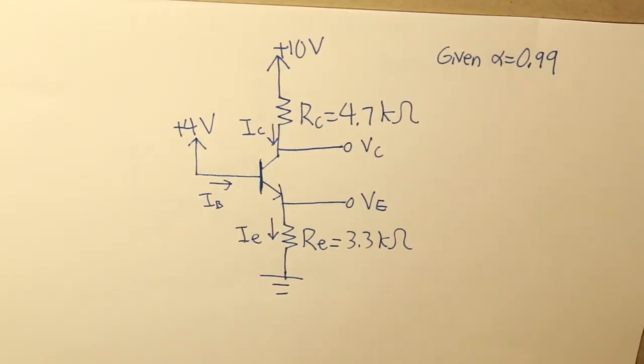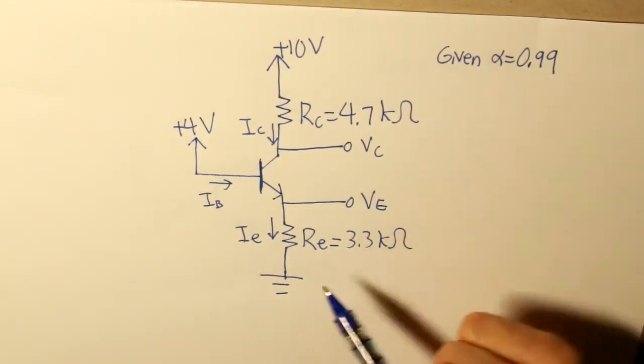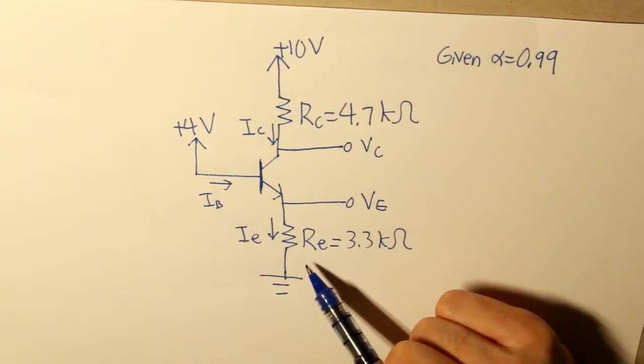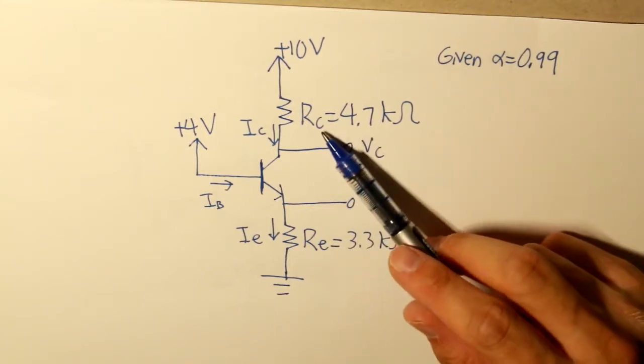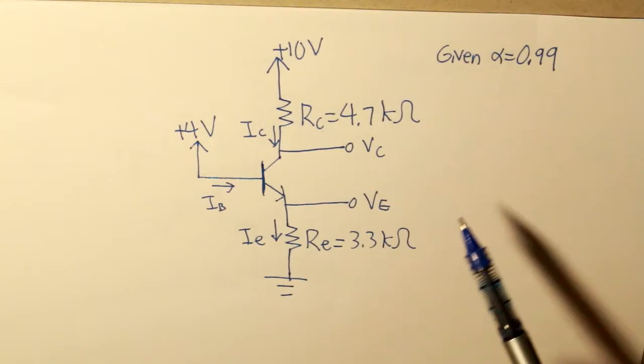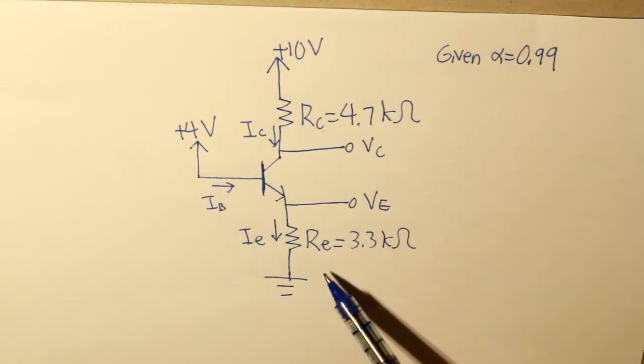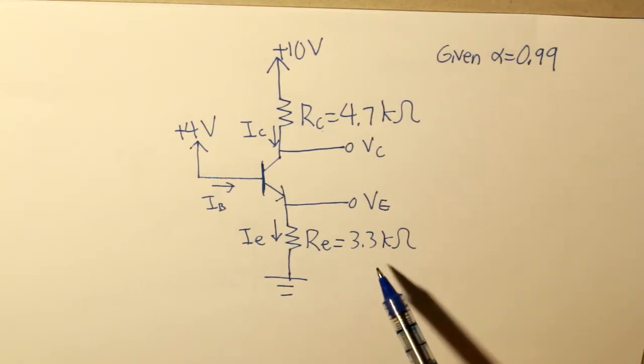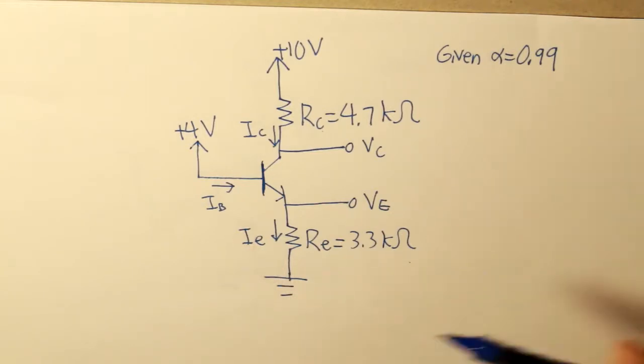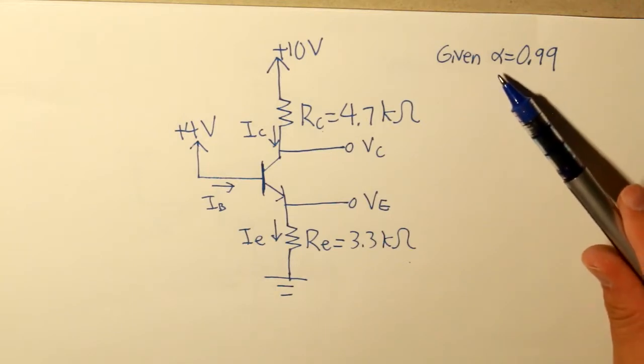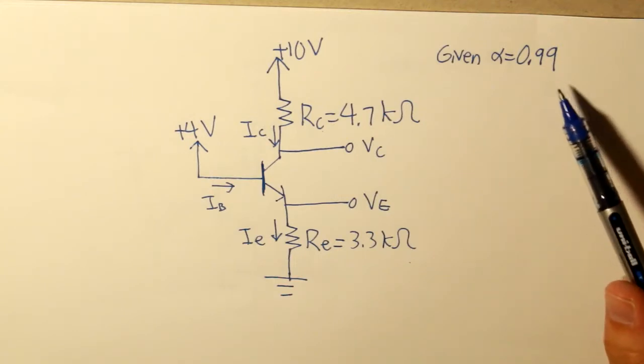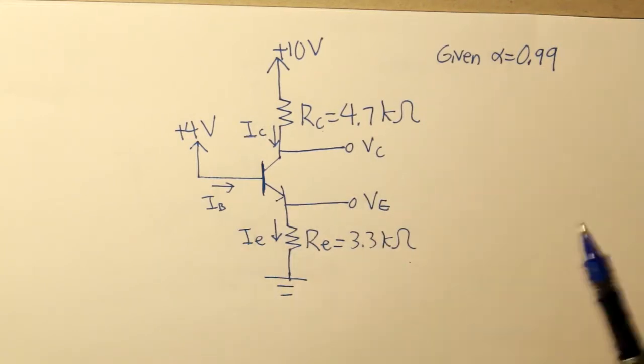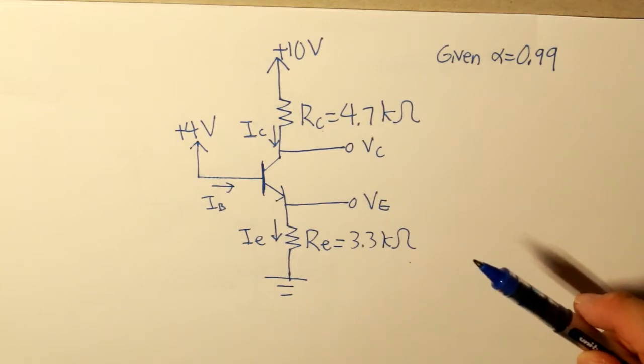Given this first example, is this BJT in active mode or not? First we're given our resistor values for our collector and our emitter. The collector is 4.7 kilo ohms, our emitter resistance is 3.3 kilo ohms, and our alpha, our common emitter current gain, is 0.99. So given these conditions, is this BJT in active mode or not?